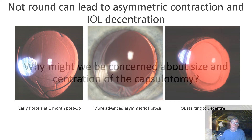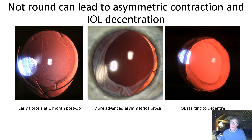Why might we be concerned about the size and centration of the capsulotomy? If it's not round, it can lead to asymmetric contraction and IOL decentration. On the left, there's early fibrosis at one month postoperatively in an eye with a silicone lens. Here we can see a more advanced asymmetric fibrosis, and the lens is starting to decentre, which is even more acute in the image on the right.